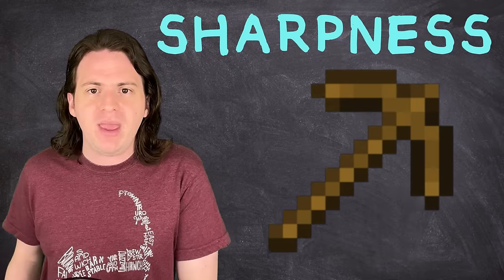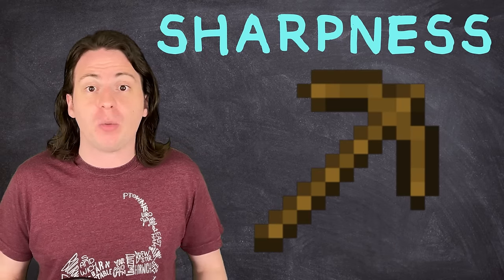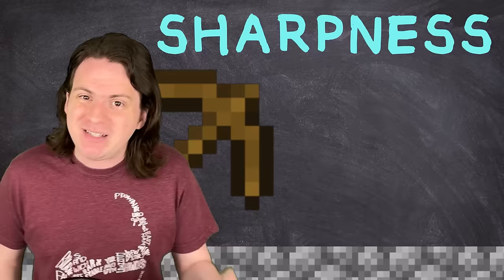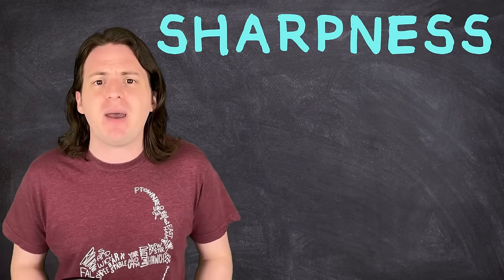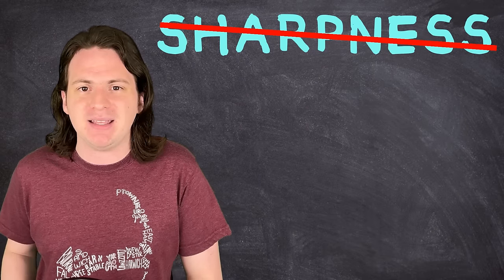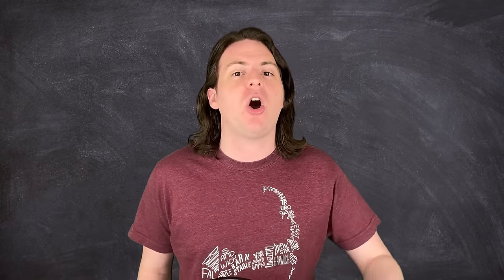You could make a wooden pickaxe that's just as sharp as a steel one. But the second you try to actually hit anything with it, that tip's just going to flatten out. So, it's less about how pointy your pickaxe is and more about how well it can maintain that point. And to find that, we need to take a look at a property called hardness.